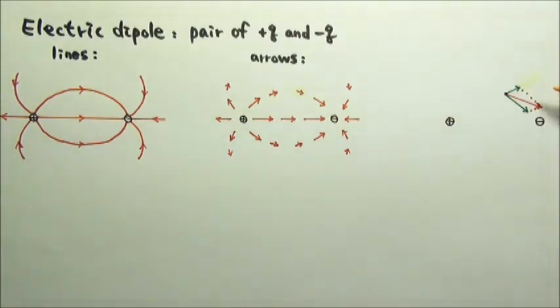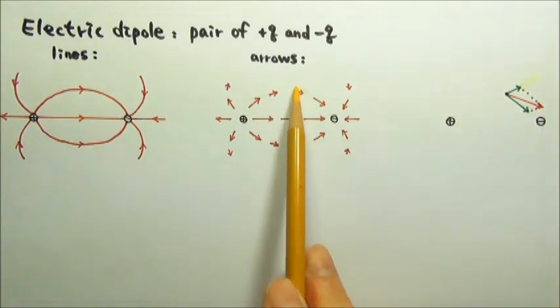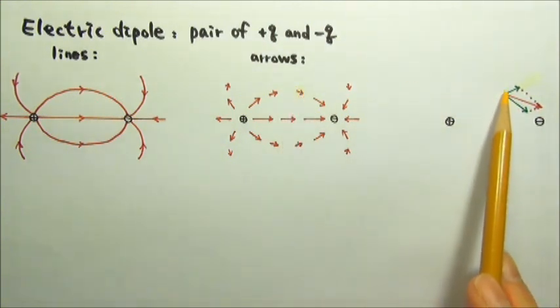To find the net field, we can add these two vectors using parallelogram method. This is the parallelogram and the diagonal is the sum. That's why this electric field here points in this direction.